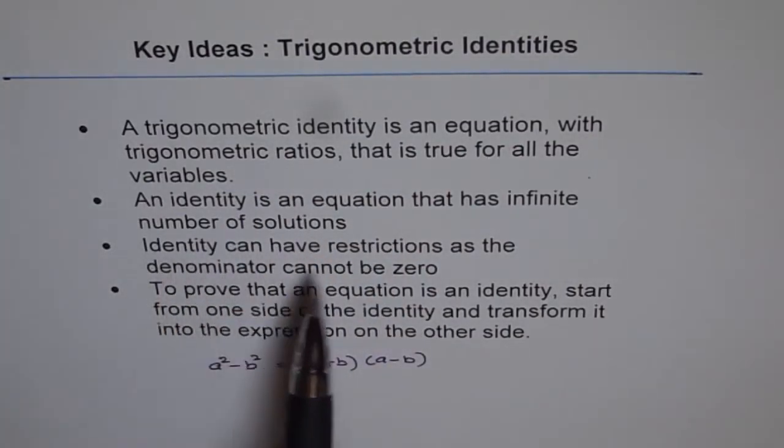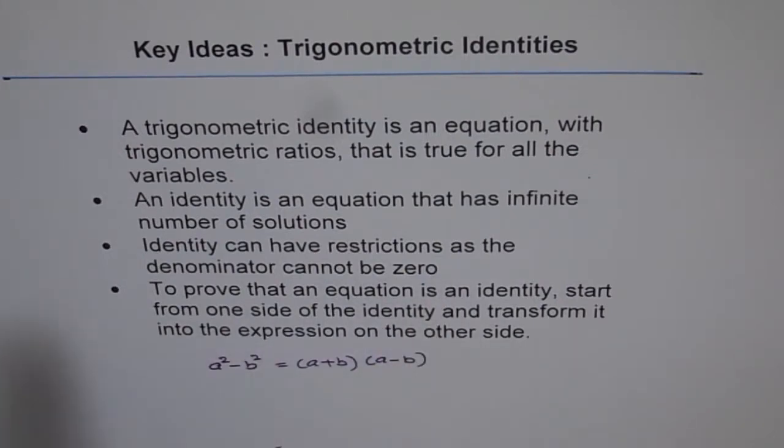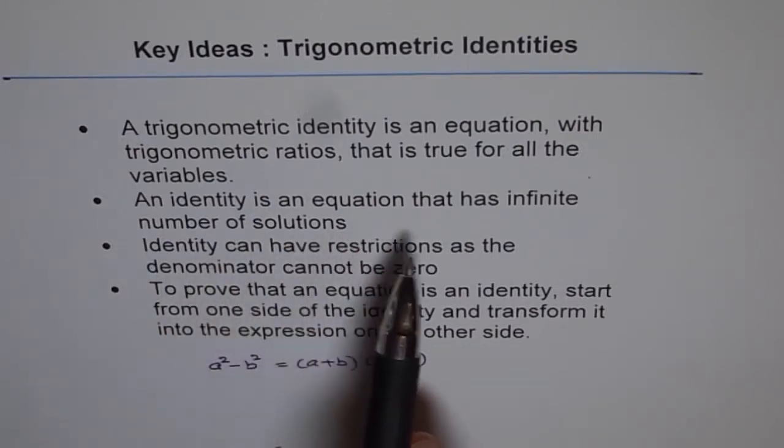A trigonometric identity is an equation with trigonometric ratios that is true for all variables. You'll have some trigonometric ratio: sine theta, cosine theta, and so on. An identity is an equation that has infinite number of solutions. It goes with the first one; it is true for all values.